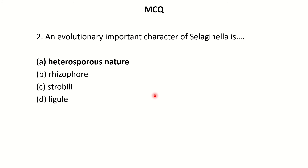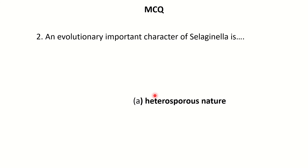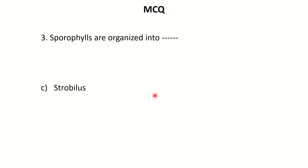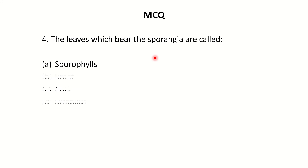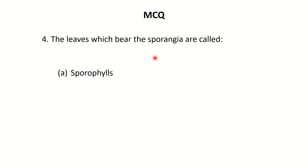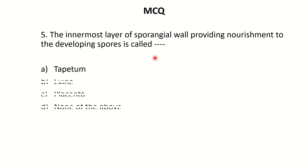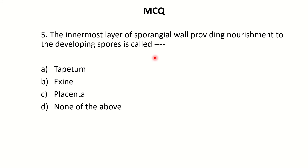An evolutionarily important character of Selaginella is its heterosporous nature. Sporophylls are organized into a strobilus. The leaves which bear sporangia are called sporophylls. Microsporangia are associated with microsporophylls, and megasporangia with megasporophylls. The innermost nutritive layer is known as the tapetum — not exine or placenta.